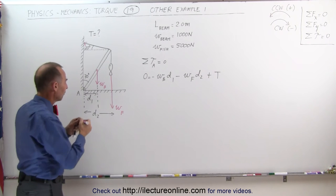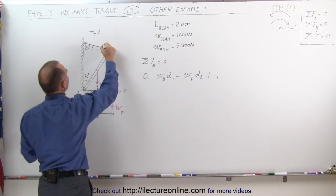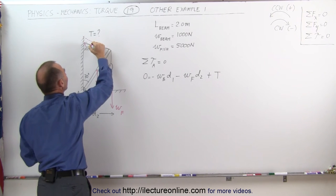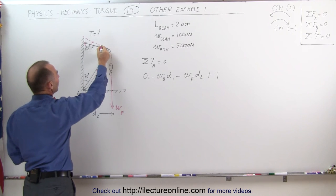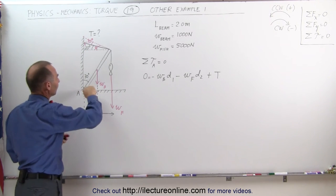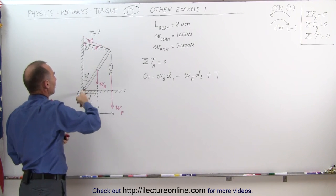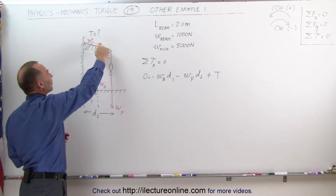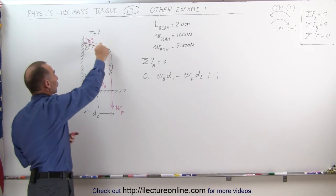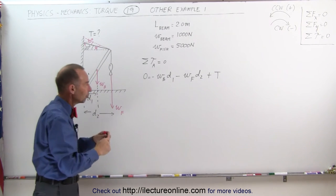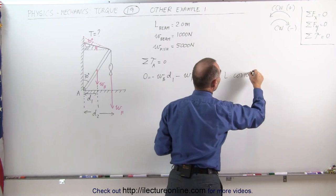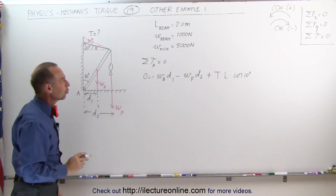What we can do instead is find the perpendicular line to the beam, and then recognize that the direction of the tension relative to the perpendicular to the beam gives us this angle. Since this angle here is 30 degrees, that means this total angle must be 30 degrees as well, which means this angle must be 10 degrees — because 30 minus 20 is 10 degrees. We can then find the perpendicular distance by taking the length of the beam times the cosine of that 10-degree angle. This is an easier way to find the torque caused by the tension.